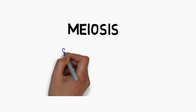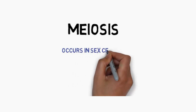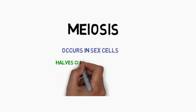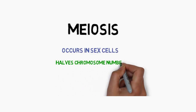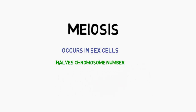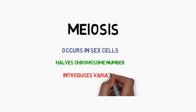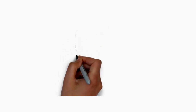In this presentation we're going to look at meiosis. Meiosis occurs in the sex cells and results in the production of gametes — sperm and egg in animals, and pollen and the eggs inside the ovules in plants. It results in halving the chromosome number and it introduces variation. This variation is really important in survival of organisms.